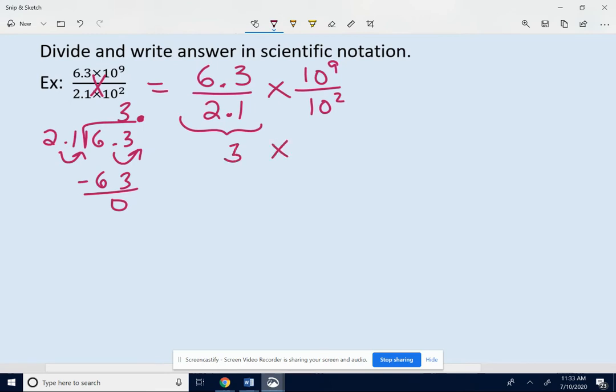And then I have 10 to the 9th divided by 10 to the 2nd. Well, when you multiply powers with the same base, you add. But when you divide powers with the same base, you subtract. So we keep the 10, we take 9 minus 2, which is 7. And I'm done because that first number is between 1 and 10. We have a number between 1 and 10 times a power of 10.